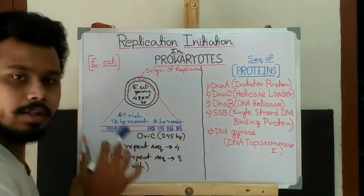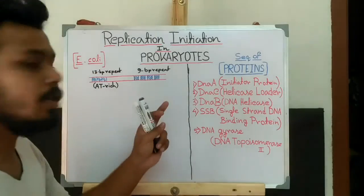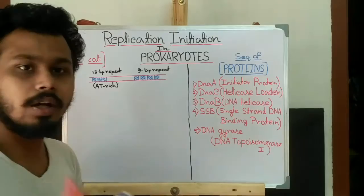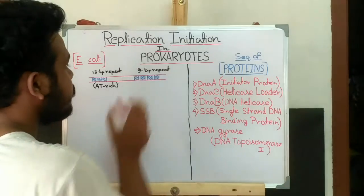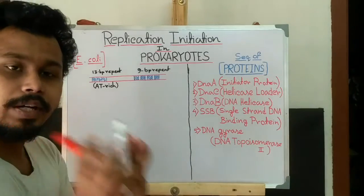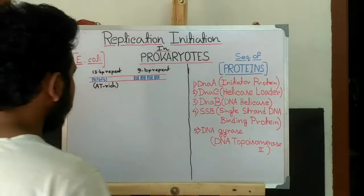Now this is the oriC structure. Replication initiates when 20 to 30 monomers of DnaA, that is the initiator protein, come and bind to the 9 base pair repeats. And the binding of DnaA to the 9 base pair repeats creates a coil in the DNA structure in this position.